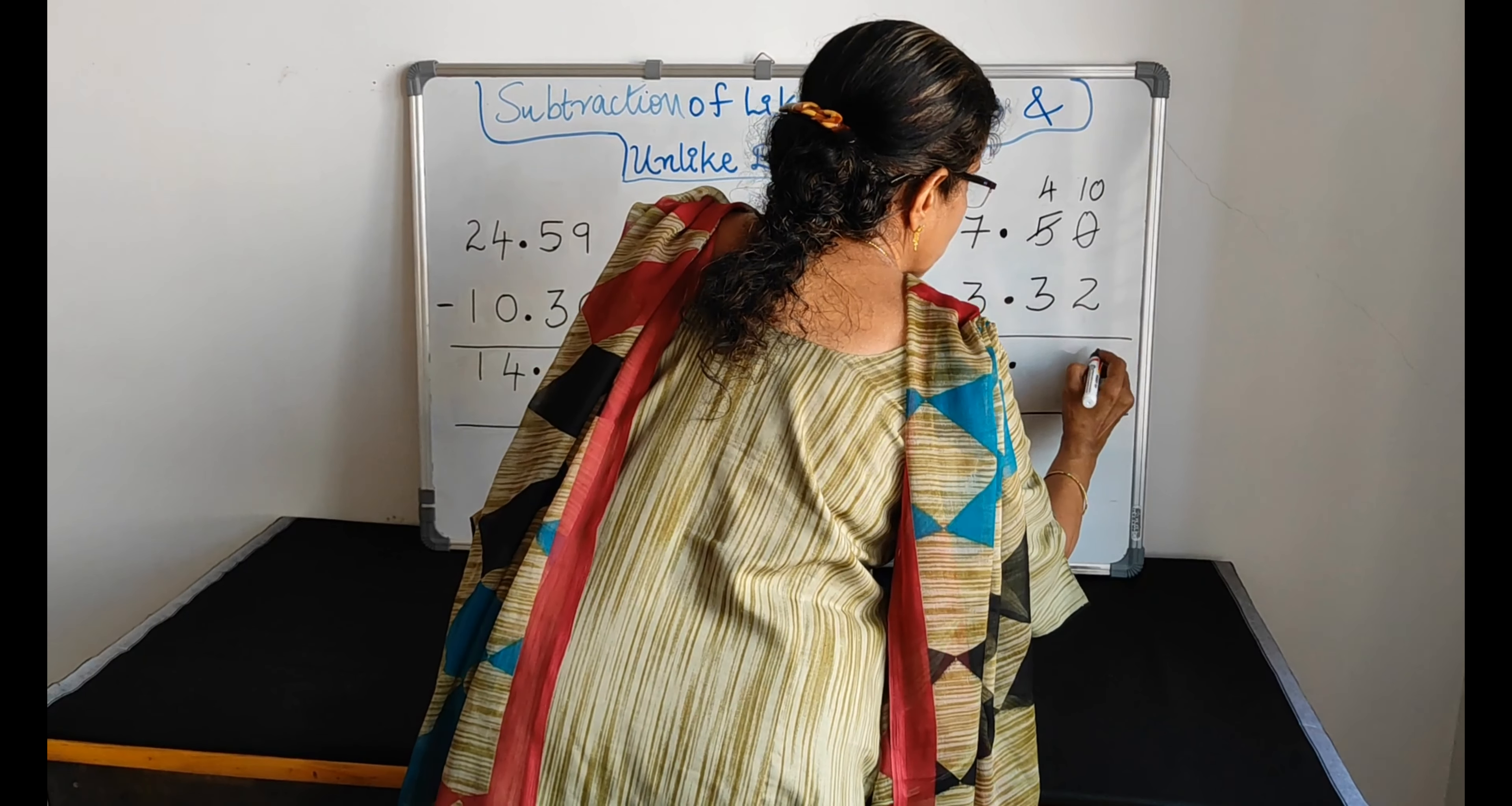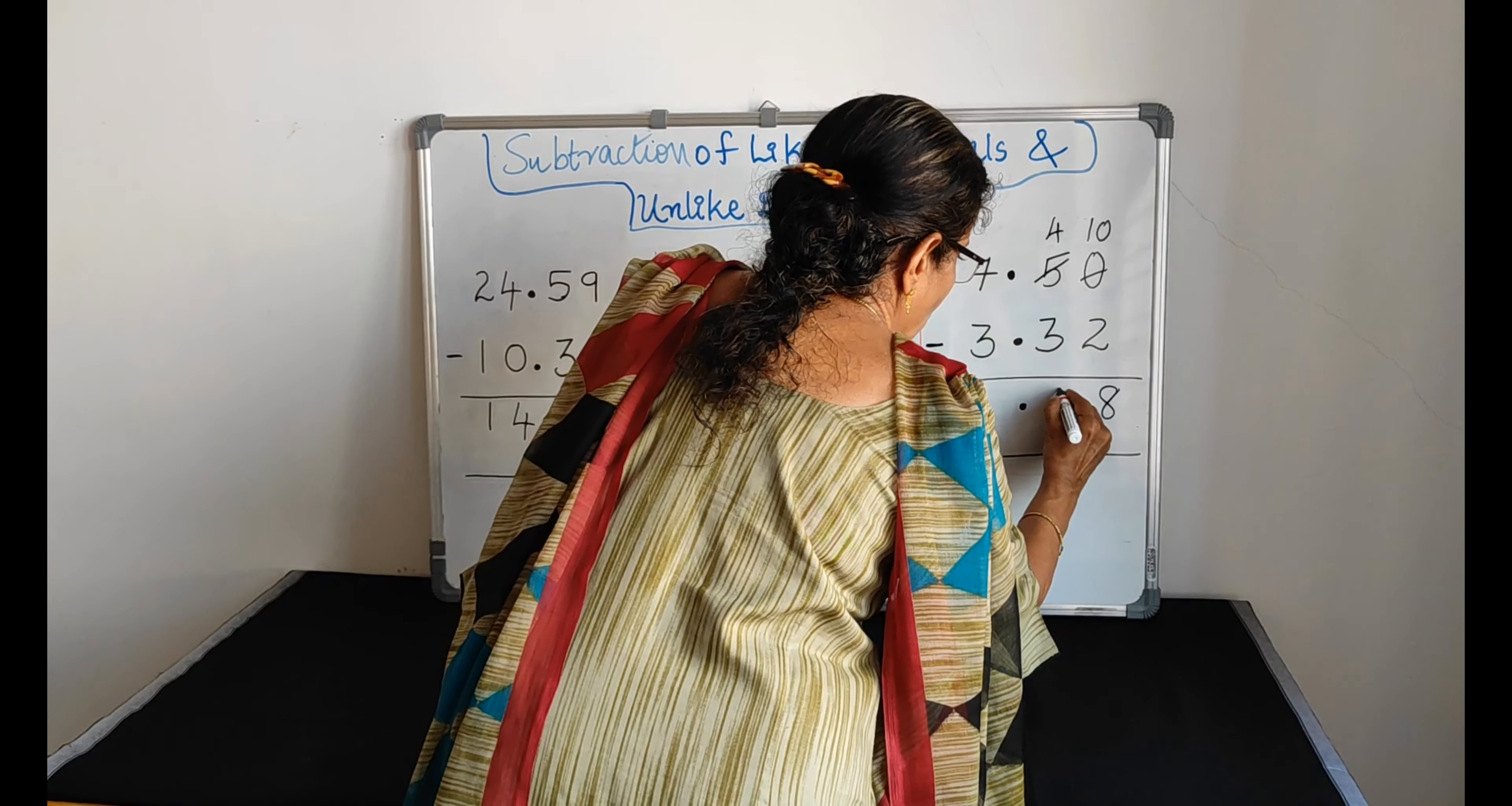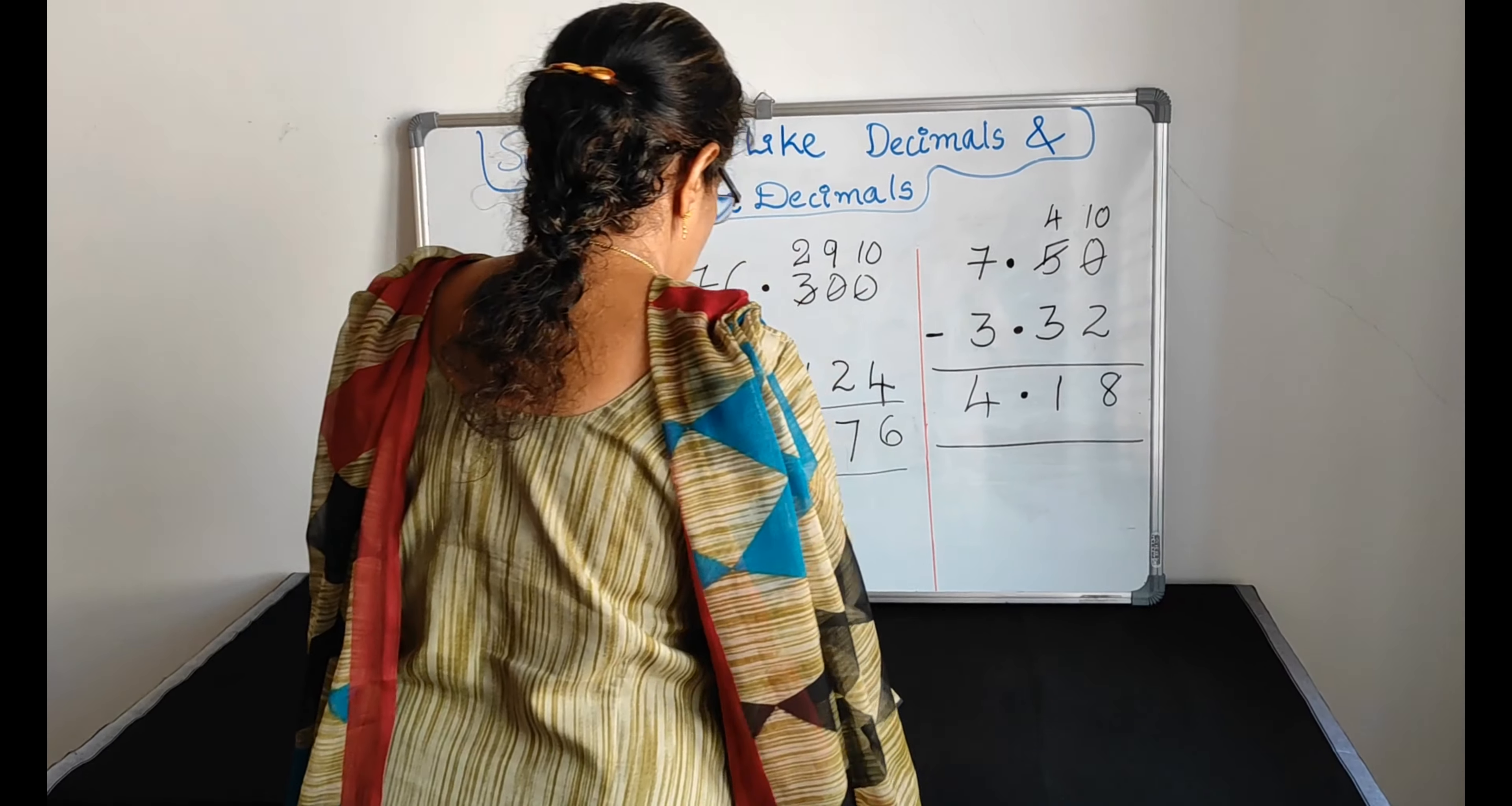What to do? Copy the decimal dot straight down. Now 0 minus 2, not possible. So what we have to do? Regrouping.